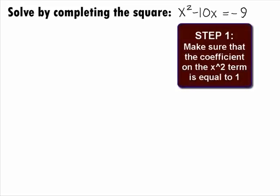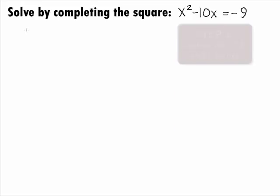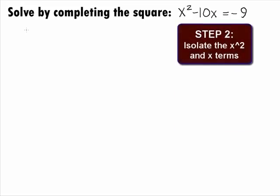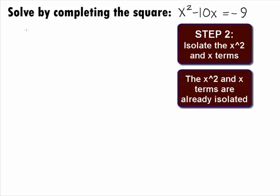In Step 1, we want to make sure that the coefficient on the x squared term is equal to 1. On our problem, the coefficient of the x squared term is already 1. In Step 2, we want to isolate the x squared and x terms. In our problem, these terms are already isolated.